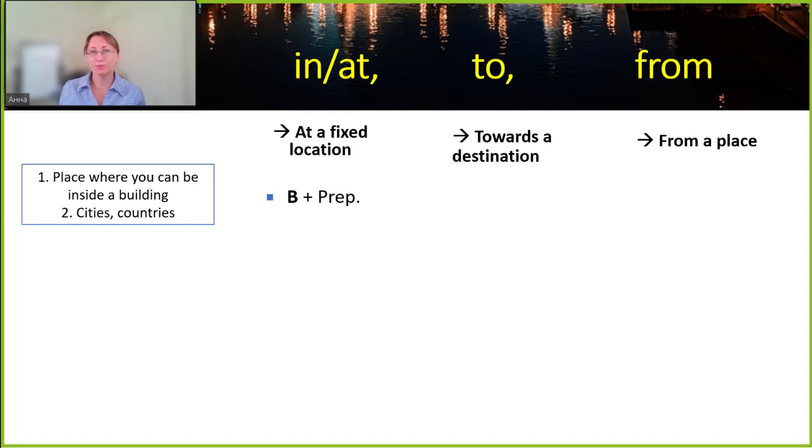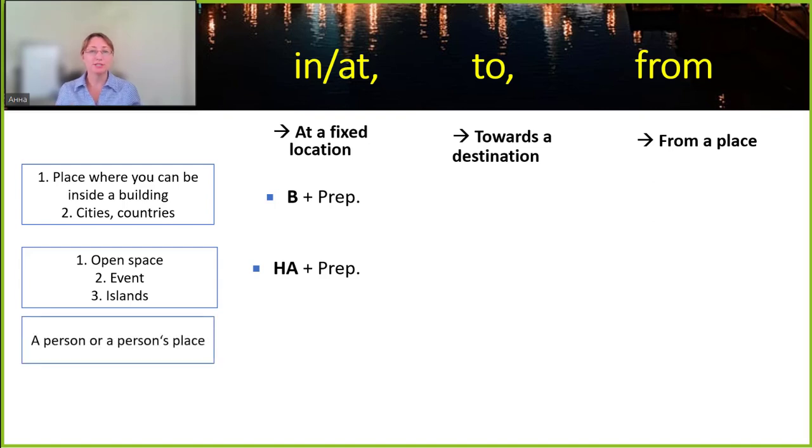Now I'm giving you only two rules for this category but there are a bit more and there are some exceptions, but here we're just looking at everything in broad strokes. The second category of locations is a location that is an open space like a farmer's market, or maybe it's an event like a concert, or maybe it's an island. For this category we would use the preposition НА and the prepositional case for the location. Finally, if your fixed location is a person's place, then we will be using the preposition У and the genitive case.